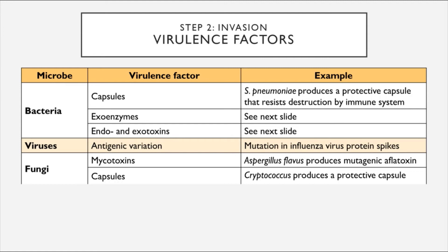Fungal pathogens also exhibit virulence factors. They can produce toxins called mycotoxins — for example, Aspergillus flavus produces aflatoxin, which is mutagenic and can damage the DNA of people infected or exposed. Fungi can also, in certain cases, produce capsules, though this is rare and only exhibited by members of the genus Cryptococcus. The protective capsule allows the fungi to evade the immune system, making Cryptococcus the only genus of fungi able to cause the brain inflammatory disease meningitis.